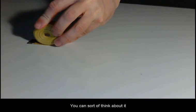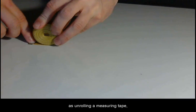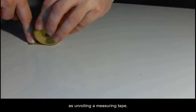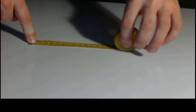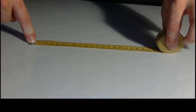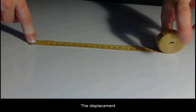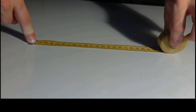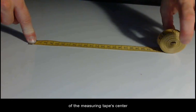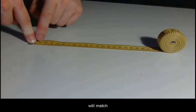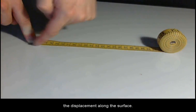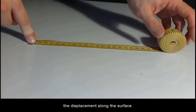You can sort of think about it as unrolling a measuring tape without letting it slip. The displacement of the measuring tape's center will match the displacement along the surface.